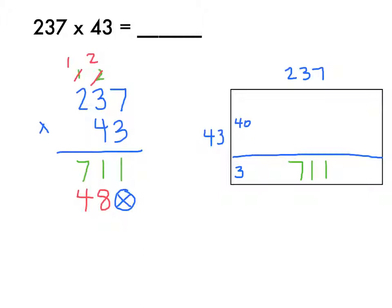Now I'm going to get rid of this 1 so I don't get confused. And lastly, I'm going to do 40 times 200, but I'm just going to think 4 times 2 is 8 plus 1 is 9. And now I have solved 237 times 40 as 9,480, and you can see that right here in my work.